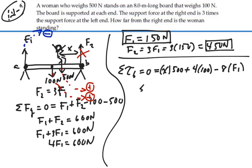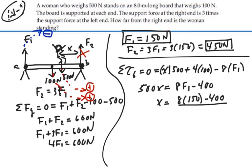Solve this for X. So we have 500X is equal to 8F1 minus 400. Or X is equal to 8 times 150 minus 400 divided by 500. So that would be 1200 minus 400 which would be 800 divided by 500 which would be 1.6 meters.